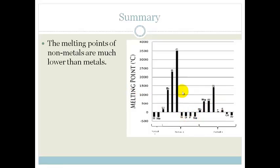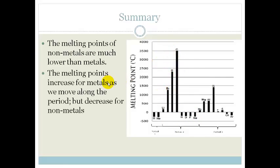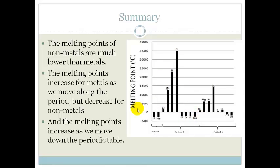Then we've got period 3. So the melting points of the non-metals are much lower than the melting points of the metals. The melting points increase along the period for the metals and decrease for the non-metals. And the melting points increase as we move down the periodic table. So as we move down within a group, they increase.